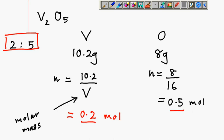So the important information here is 0.2 equals to 10.2 divided by V. We need to find the molar mass of vanadium. So that's 10.2 divided by 0.2, that will give you 51 grams per mole. This is vanadium.